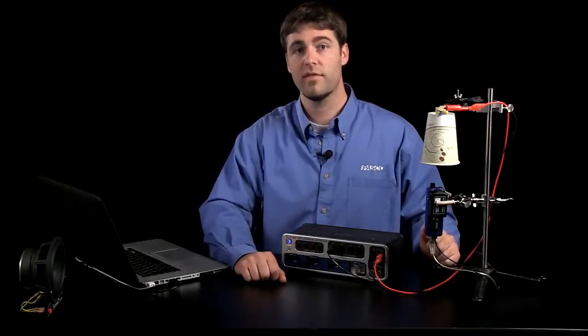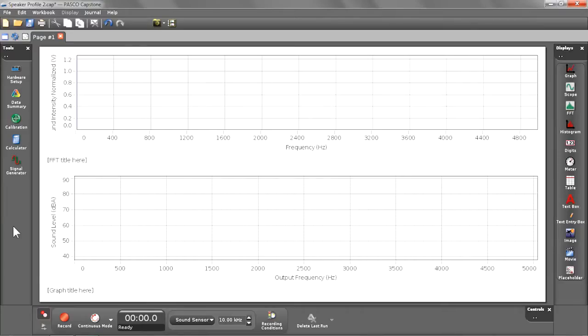So let's go ahead and take a look at the software and see what we're working with. As you can see here, I already have two displays set up in the software. The top is a Fast Fourier Transform display showing the data from my Science Workshop sound sensor, and the bottom is a sound level versus output frequency graph which is going to show the data from my Passport temperature, sound level, light sensor.